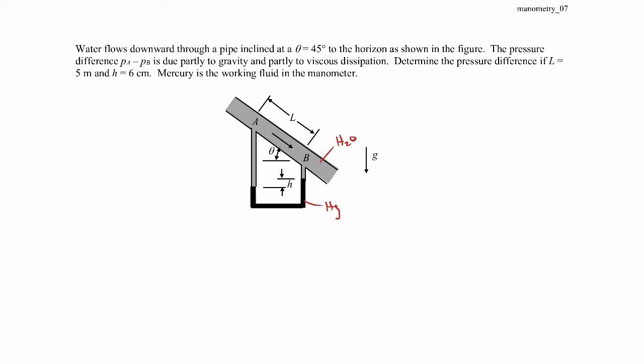The way we can find the pressure difference is we can use this U-tube manometer. The pressure at point A is the same pressure at the start of the left leg of the manometer, and the pressure at B is the same pressure at the top of the right leg of the manometer.